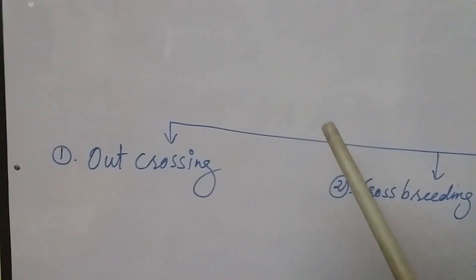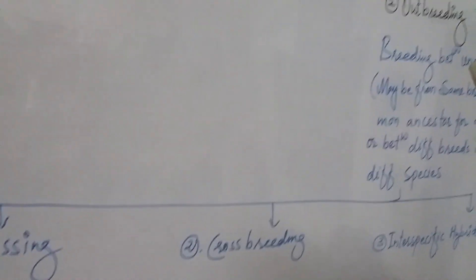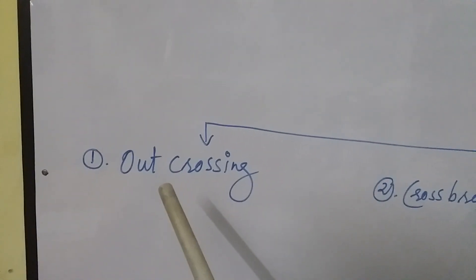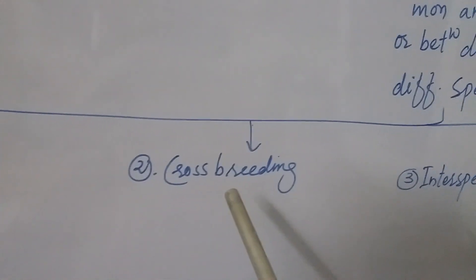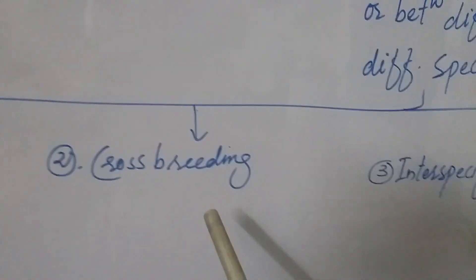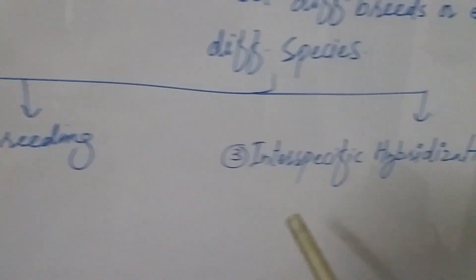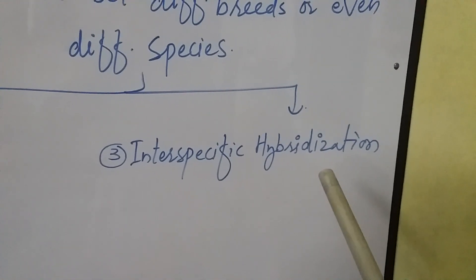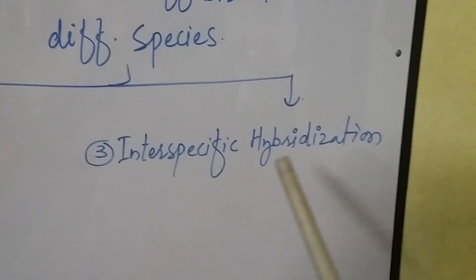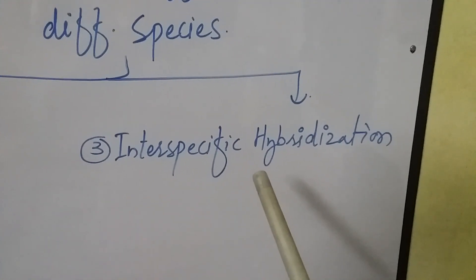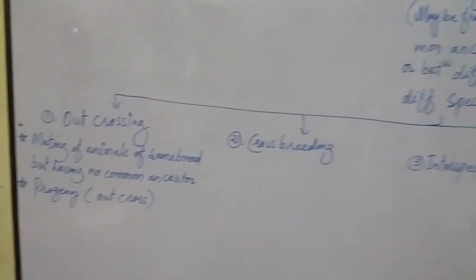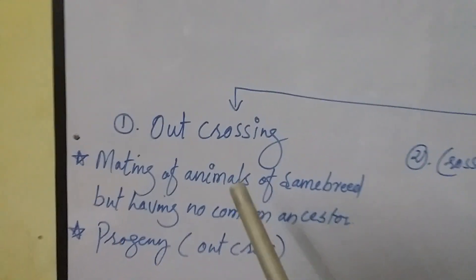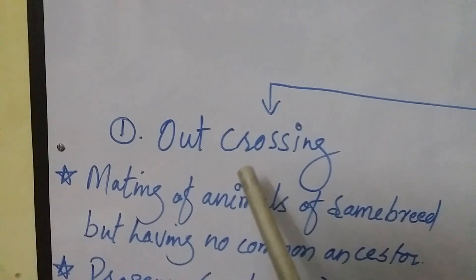There are three types of outbreeding. Type number one is out-crossing, type number two is cross-breeding, and type number three is interspecific hybridization. Let's have a look at out-crossing.